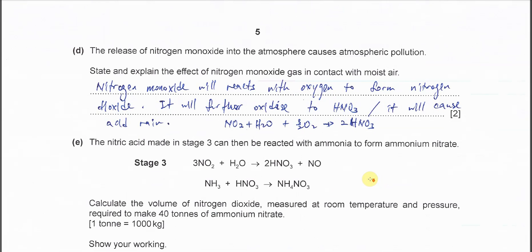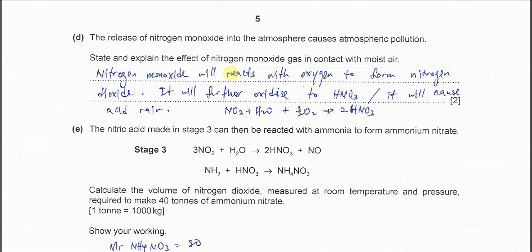Part D: The release of nitrogen monoxide in the atmosphere causes atmospheric pollution. State and explain the effect of nitrogen monoxide in contact with moist air. This one is very easy. You need to know nitrogen monoxide...